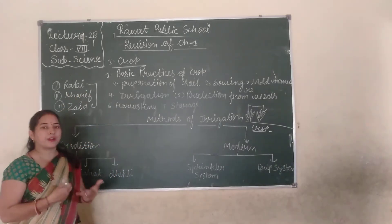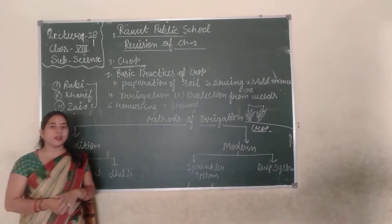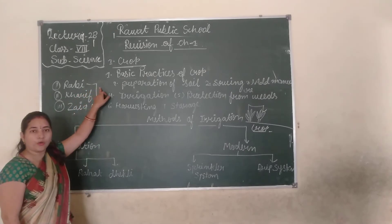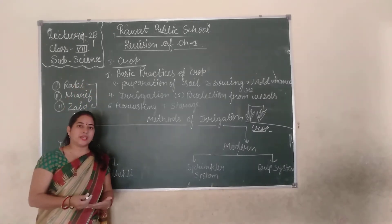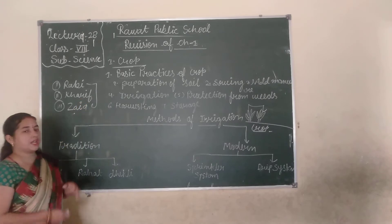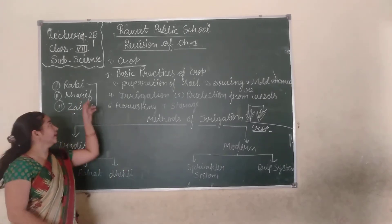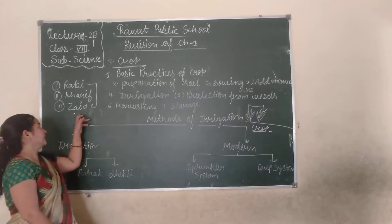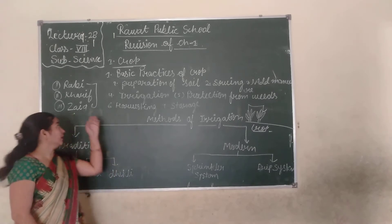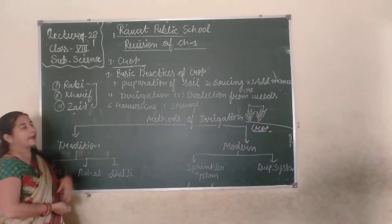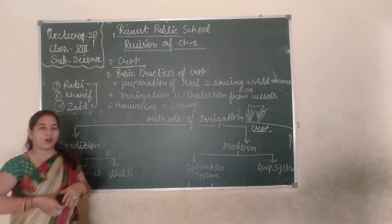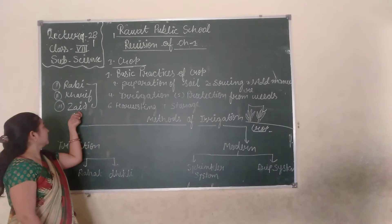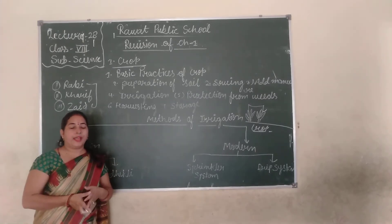What is the meaning of Rabi crops? Rabi crops are grown in the winter season. In the rainy season, we can grow the Kharif crop. The example of Kharif crop is cucumber and watermelon.